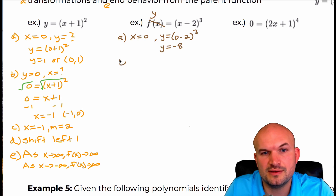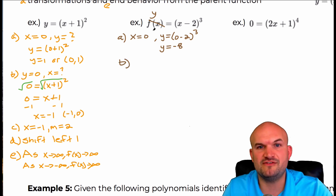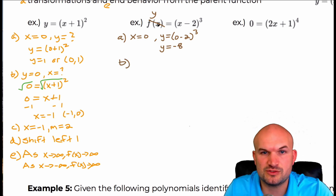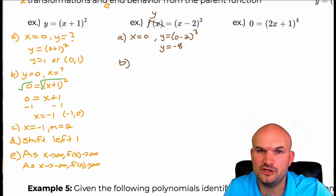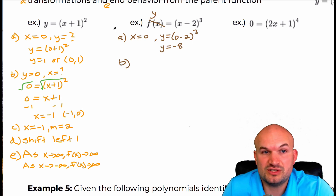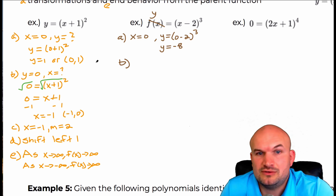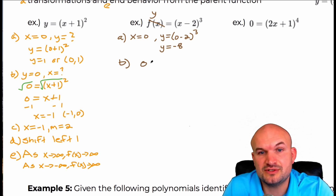If we're looking for the zeros, a lot of times when we're talking about zeros we're talking about the function — when f of x equals zero, which is really the same thing as when y is equal to zero. So let's set y equal to zero, or f of x equal to zero, and then solve for x.